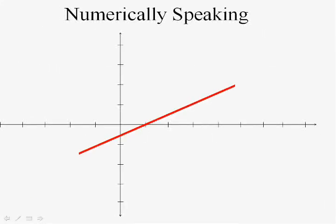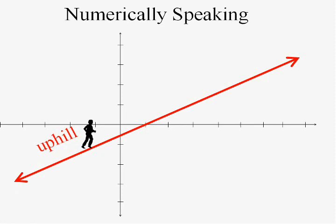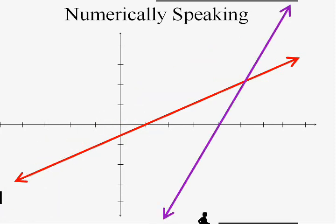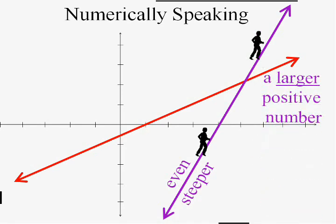Numerically speaking, if you looked at this line and tried to walk on it, it would of course be uphill — a positive slope. This one would also be a positive slope, but it would be even steeper. So that would be a larger positive number if we tried to measure its leaniness.